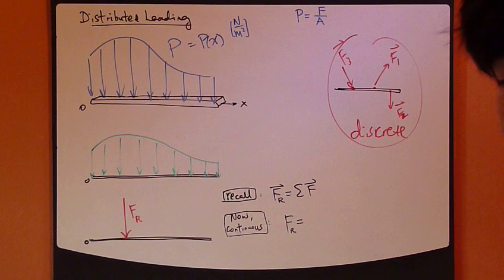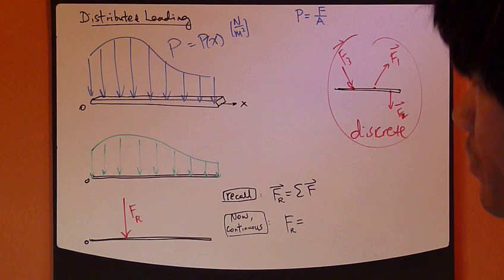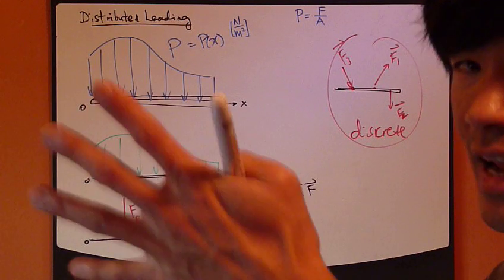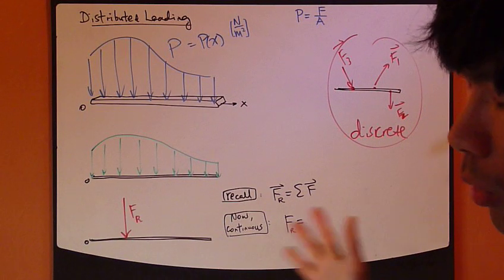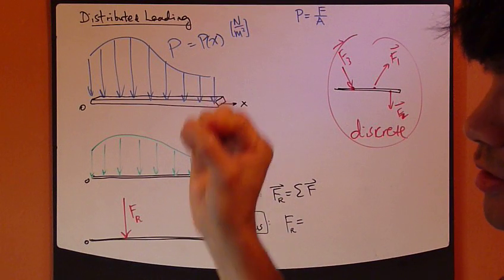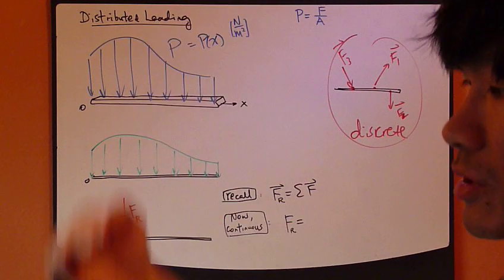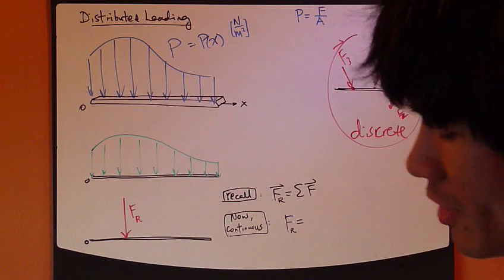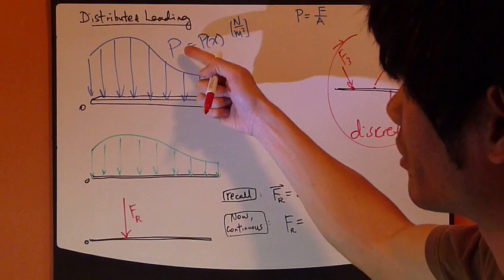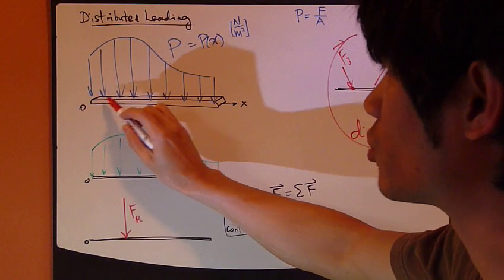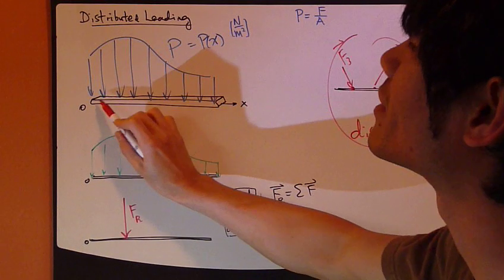This pressure is being applied continuously due to maybe wind, or let's say water on the side of the dam. So water creates a pressure at different locations, a continuous location on the wall. So in this case, it's no longer discrete because this pressure right here, it's not applied at individual locations, but instead it's continuous.